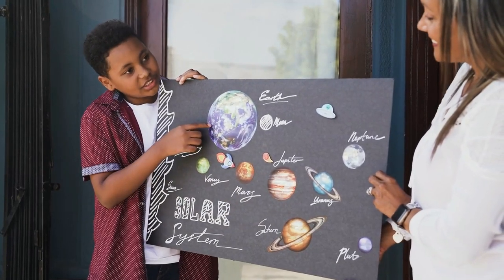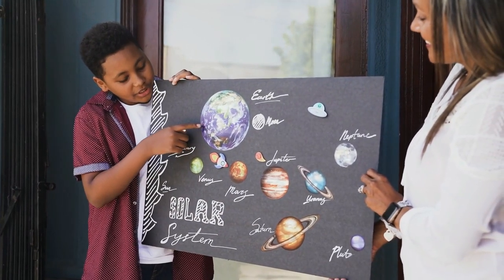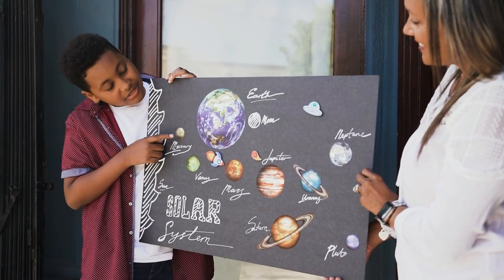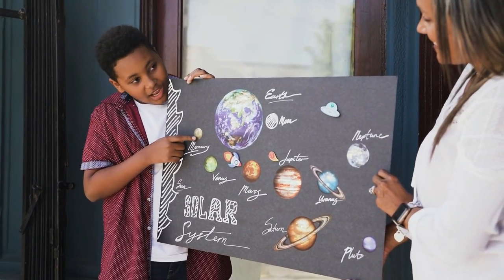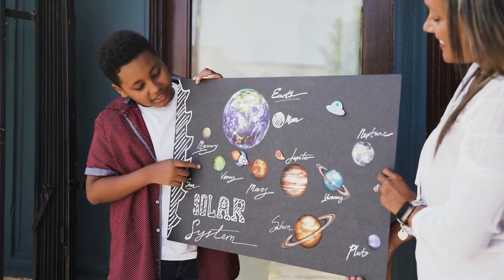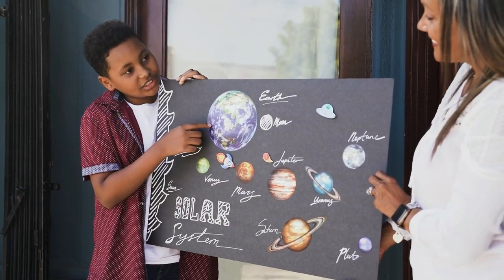Welcome to our journey through the outermost regions of the solar system. In this video, we will explore the Oort Cloud and the Kuiper Belt, two fascinating regions that hold secrets about the formation and evolution of our solar system.